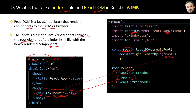Here, React.StrictMode is a special wrapper element that helps with debugging and identifying issues in your code. But it is optional and you can also delete it for the time being. So that is the answer to this question.